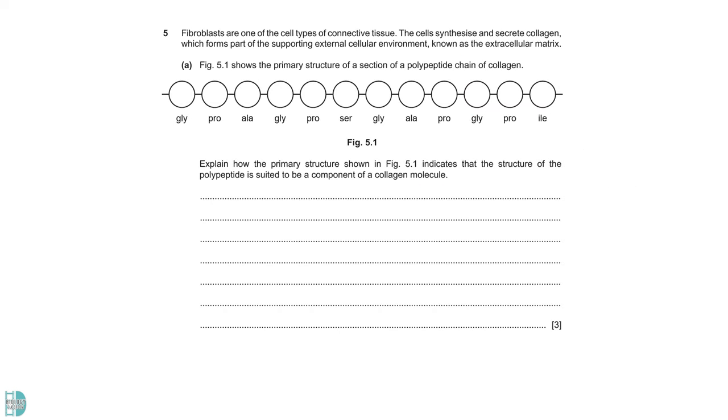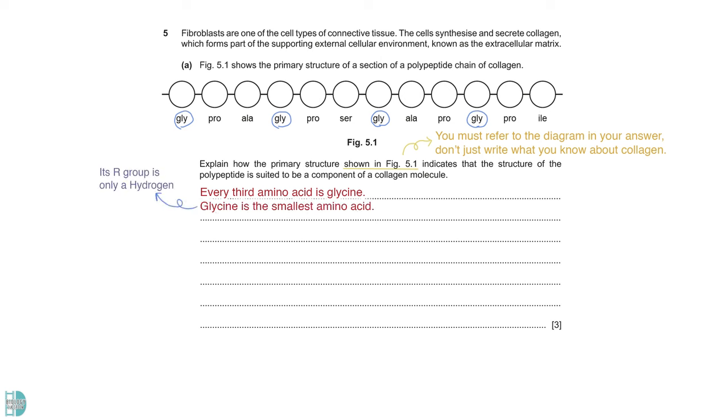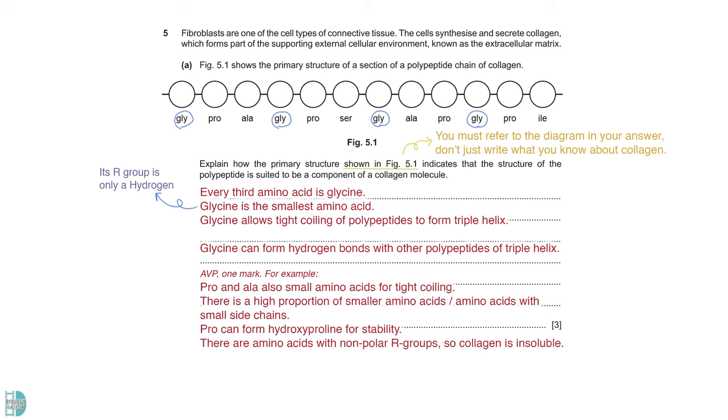In question 5, you have some descriptions of collagen and a diagram showing you the primary structure of the polypeptide chain. You have to explain how the primary structure shown in the figure indicates that the structure of polypeptide is suited to be a component of a collagen molecule. Remember that you must refer to the diagram in your answer. You can see that every third amino acid is glycine. Glycine is the smallest amino acid as the R group is only one hydrogen. Because of that, glycine allows tight coiling of polypeptides to form triple helix. Another thing you can mention is that glycine can form hydrogen bonds with other polypeptides of triple helix. There is one mark for AVP as well. For example, proline and alanine are also small amino acids so they allow tight coiling as well.